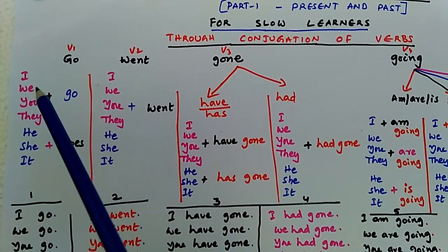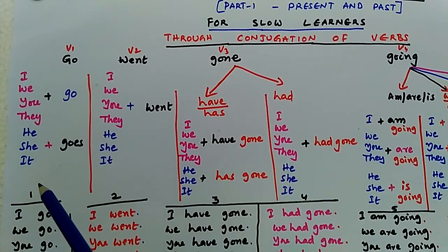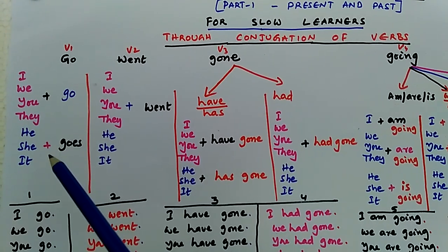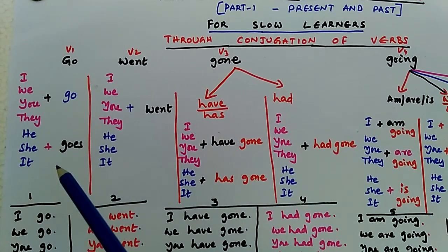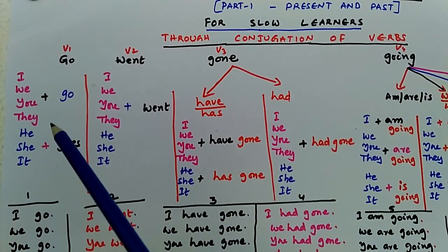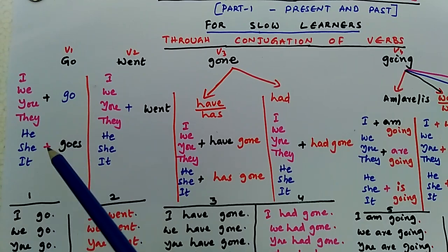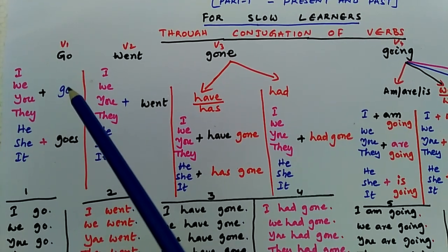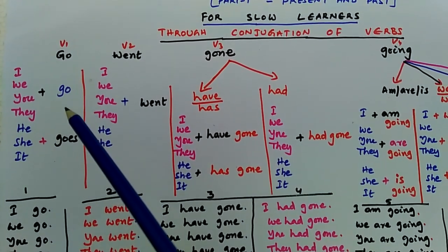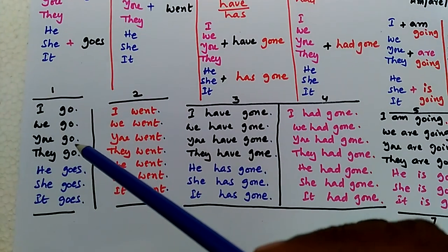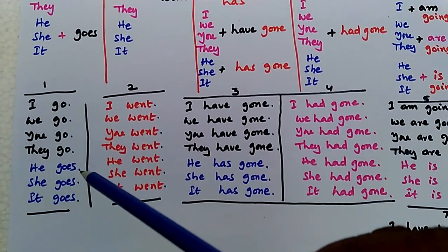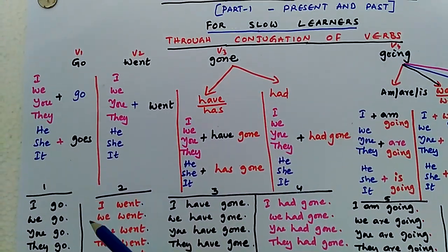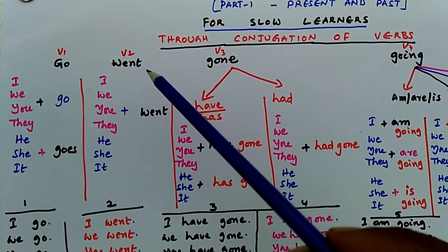We ask the students to add I, we, you, they, he, she, it to verb one. We can write one table, but when we write for he, she, it, the verb takes the S form. So: I go, we go, you go, they go, he goes, she goes, it goes. By writing so, we get the first table — table one — which is called the simple present tense table.